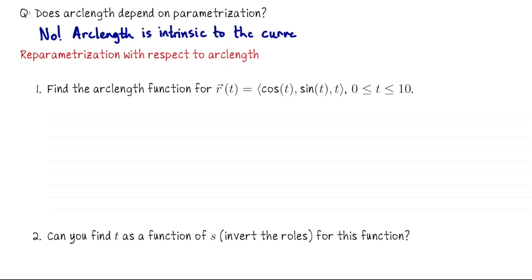Now we're going to begin reparametrizing a basic curve with respect to arc length. This is an algorithm that has several steps, so I've tried to divide it up into concrete actions. So the first thing we're going to do is find the arc length function for this helix, r of t equals cosine of t, sine of t, t, for t values going from 0 to 10. If we're asked to find the arc length function, what are we looking for? We're looking for s of t.